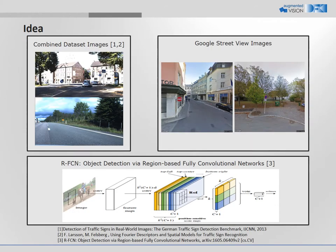The idea is to train a convolutional object detector to detect traffic signs in these images. We use region-based fully convolutional networks for detection, also known as RFCN. The network is trained on a combined dataset composed of images from Belgium, German, Swedish, and Croatian traffic sign datasets with 26 classes of traffic signs.